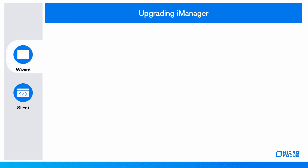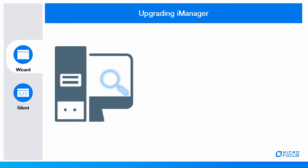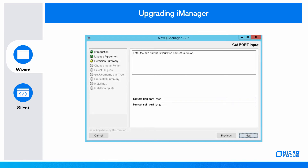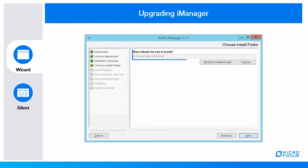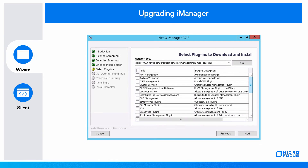You can update iManager using the wizard or in silent mode. Using the wizard: if the setup program for iManager server detects a previously installed version of iManager, it might give you the option to stop the installation process or remove the existing iManager, JRE, and Tomcat installations. Remove iManager, JRE, and Tomcat and continue with the installation. Enter the port values for Tomcat HTTP and SSL. For upgrading, specify the path where the older version of iManager was installed. Select the iManager plugins that you want to install along with the upgrade.